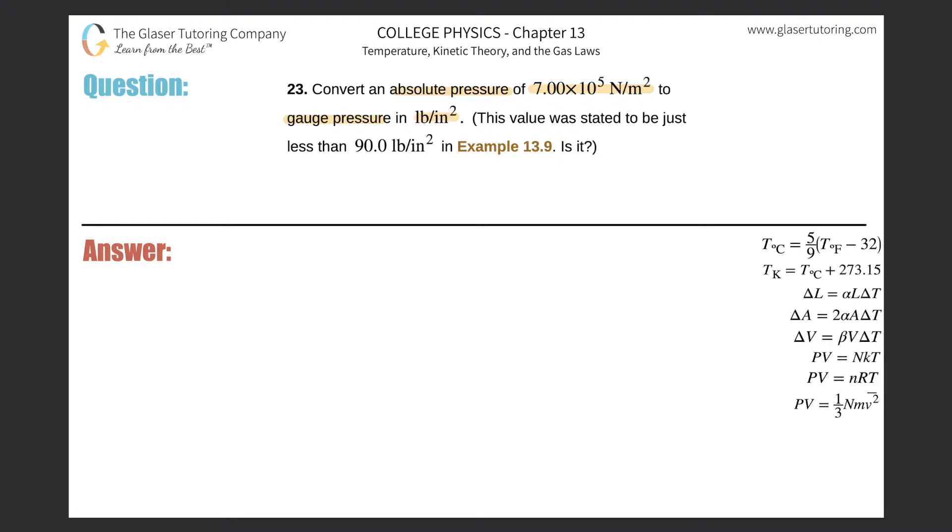First thing is you need to know the relationship between gauge pressure and absolute pressure. We have this formula: gauge pressure equals the absolute pressure minus 1.013 times 10 to the 5th. All the units here have to be in pascals or newtons per meter squared. They're the same thing.